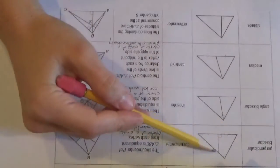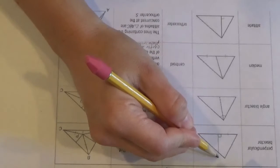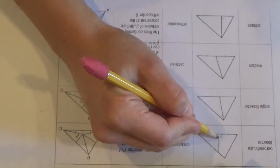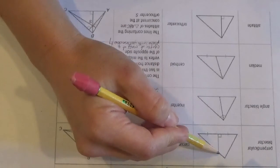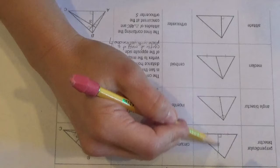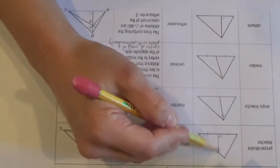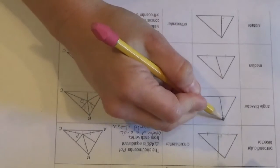So here we have all our basic lines. We have a perpendicular bisector, which as its name says, is perpendicular to a side and bisects the side. Notice it doesn't have to come from a vertex because it's forced to do all these things, be perpendicular and bisect. It's forced to go wherever it goes, whereas all of these, the angle bisectors...